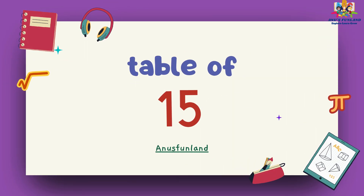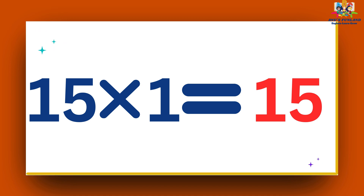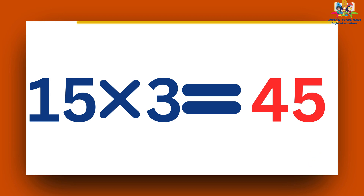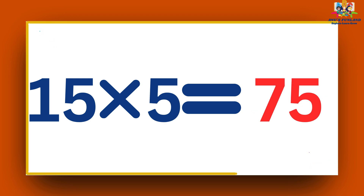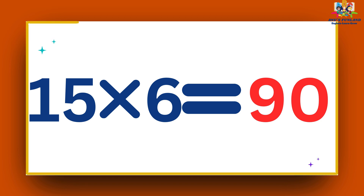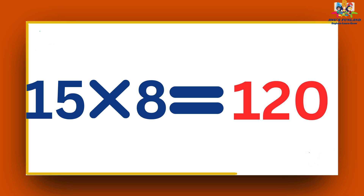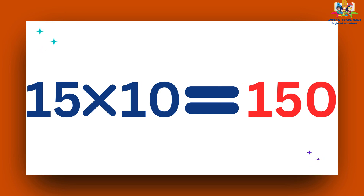Now we will learn table of 15. 15 ones are 15. 15 twos are 30. 15 threes are 45. 15 fours are 60. 15 fives are 75. 15 sixes are 90. 15 sevens are 105. 15 eights are 120. 15 nines are 135. 15 tens are 150.